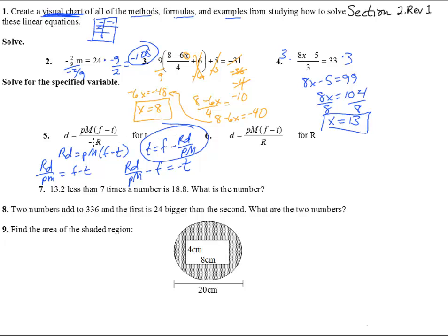Good. Now you might have gotten a little bit different answer if you distributed this in. You have a p m f minus a p m t. So you could have had these two fractions added together with a common denominator of p m. So you could have had something like f minus r d over p m or r d minus f over negative p m. All of those would be correct answers.